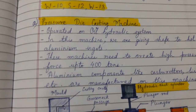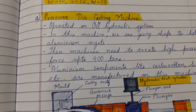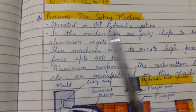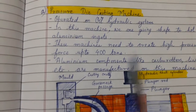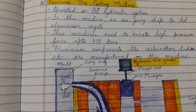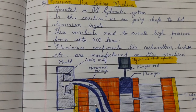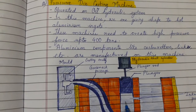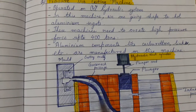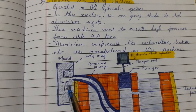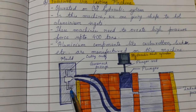The first application is the pressure die casting machine. It is operated on an oil hydraulic system. In this machine we are giving shape to hot aluminium ingots. This machine needs to create high pressure up to 400 tons. Aluminium components like carburetors, links, etc. are manufactured in this machine.